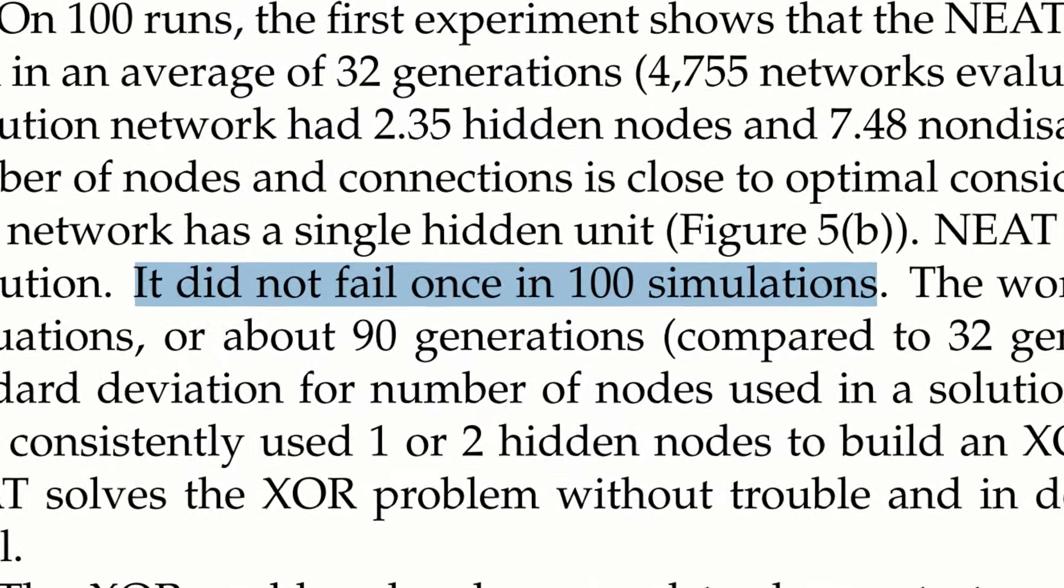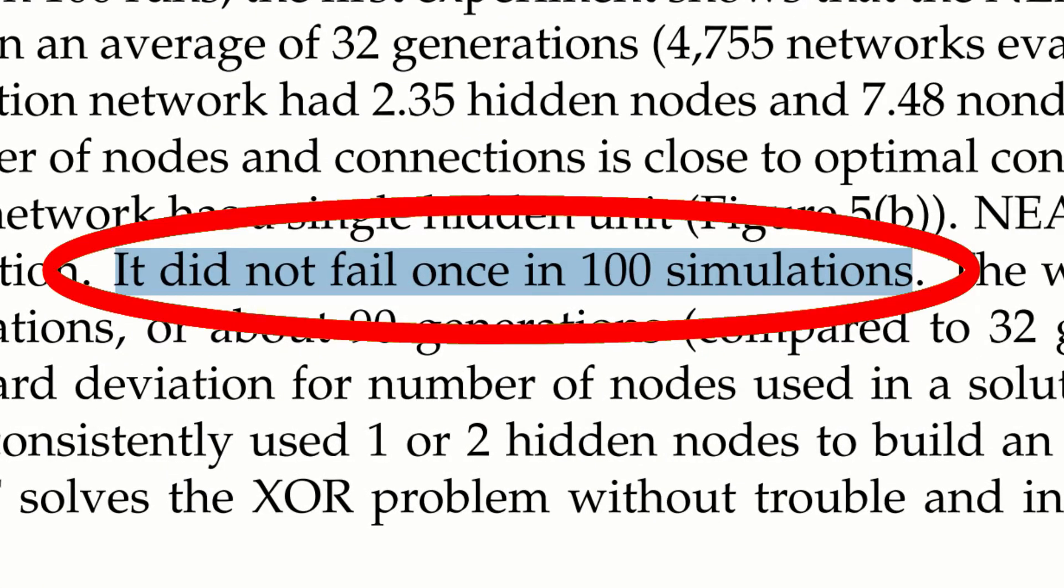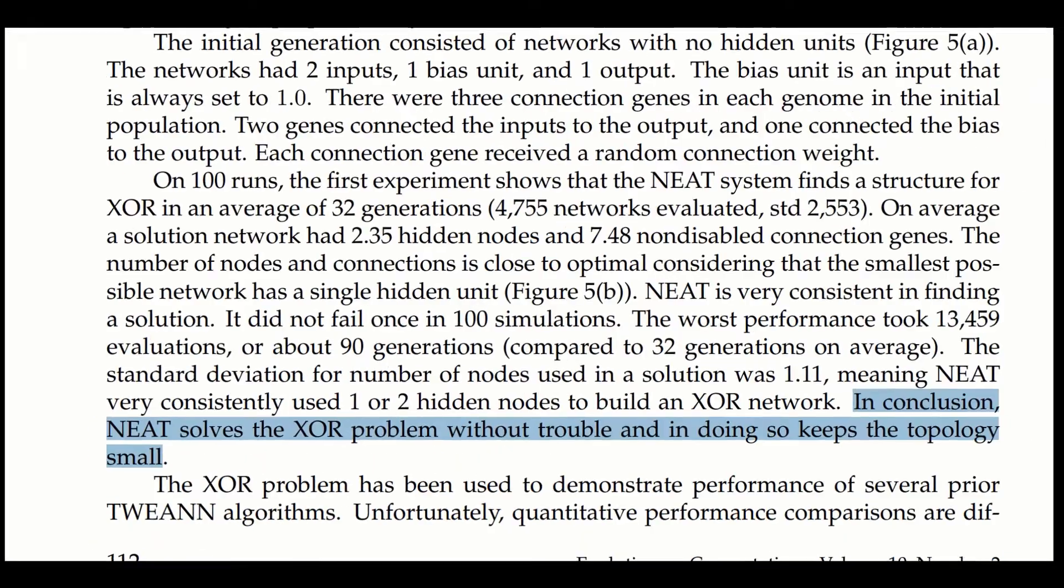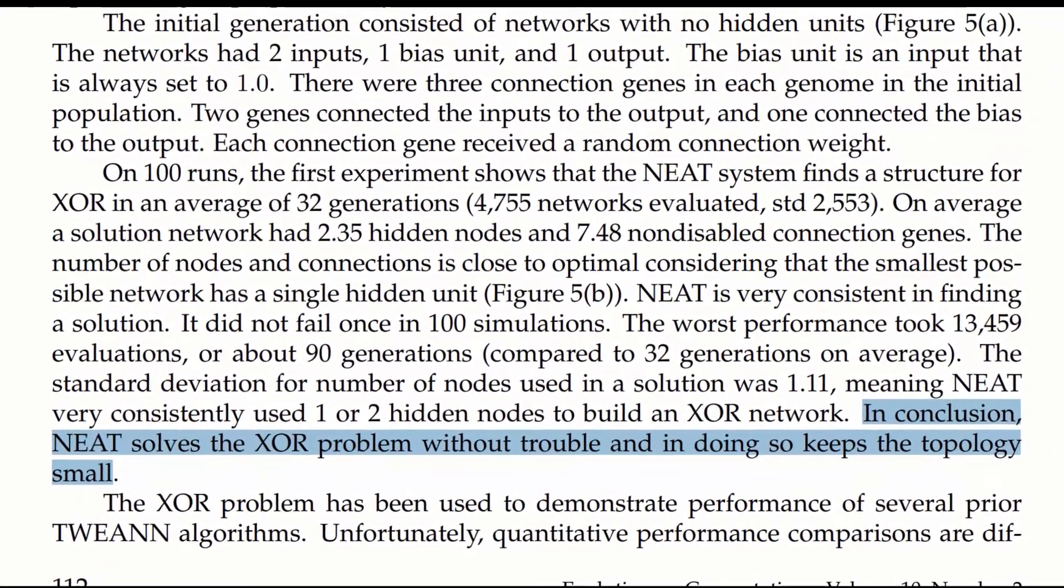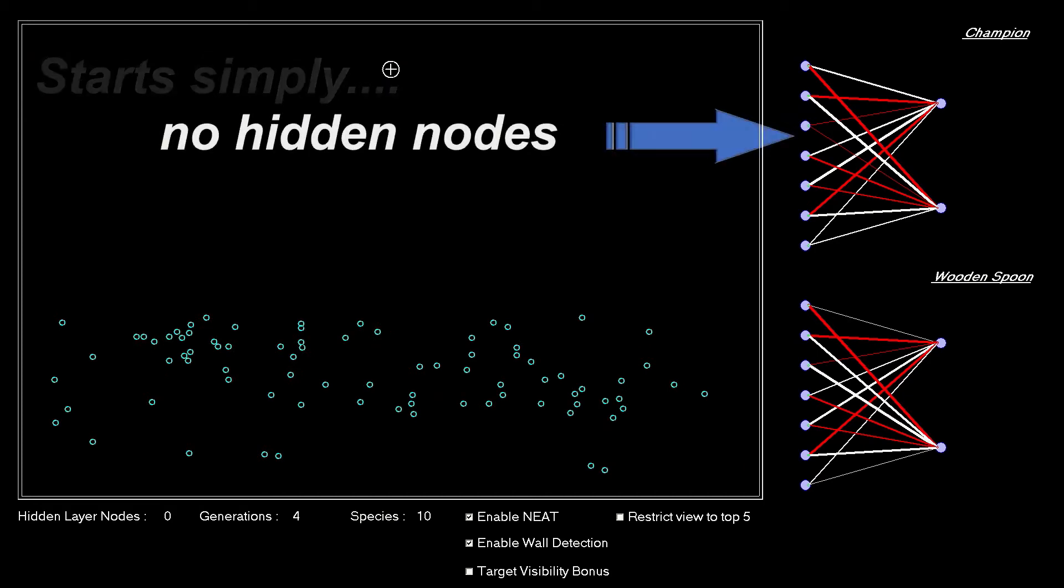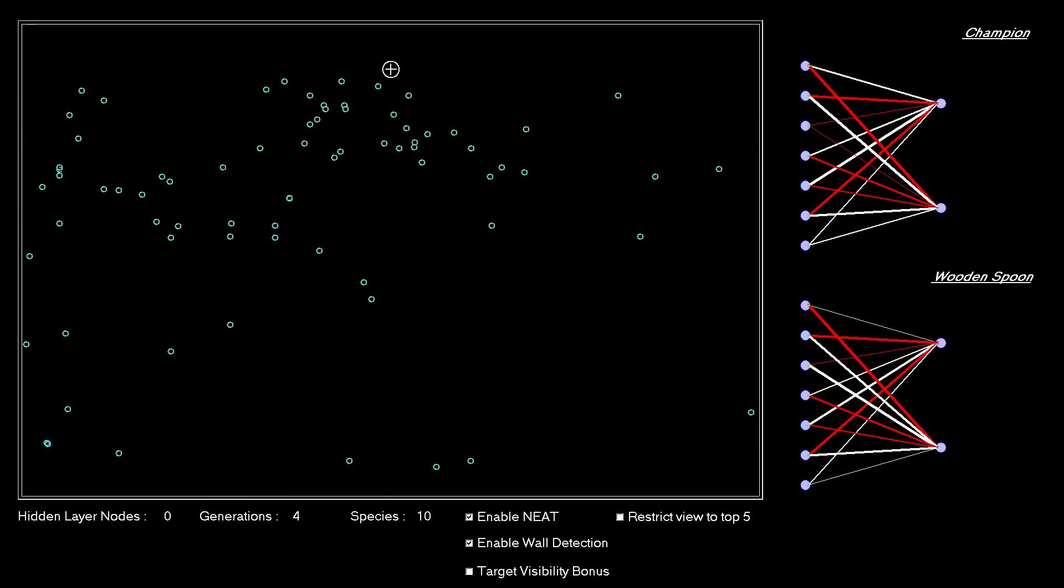And also the fact that it never failed to find a solution to the exclusive OR problem. Admittedly, it's an easy problem for a network to solve, but it does require at least one hidden node, so it's good for fault finding and checking your own solution. But does speciation really make a difference in a set population? What is the correct target for the preferred number of species?